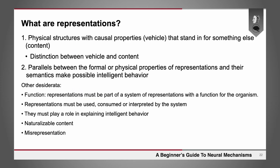What are representations? Philosophers have struggled with this problem. If you want representations that have causal import, they're going to have to be some sort of physical structure with causal properties — what philosophers call the vehicles of the content. Those vehicles have to stand in for something else, namely the content itself. There's a distinction between vehicle and content, where the content is the semantics of the representation. There's going to be a parallel between the physical properties of these representations and their semantics that makes intelligent behavior possible.